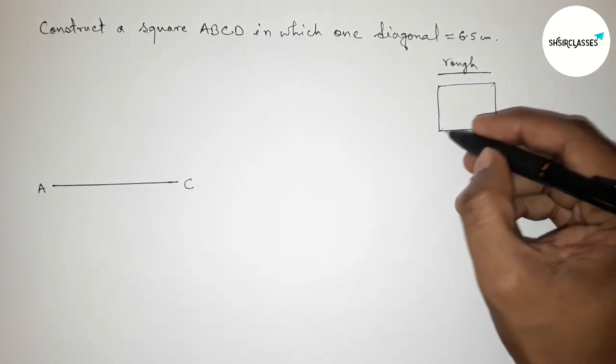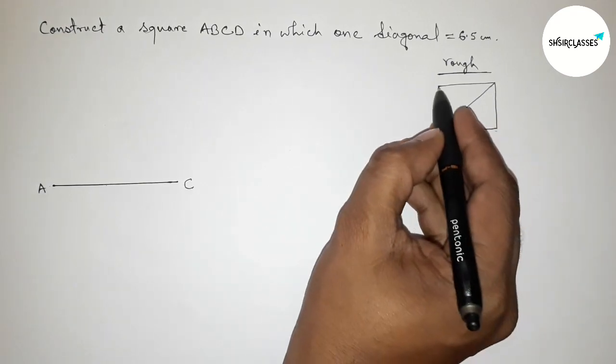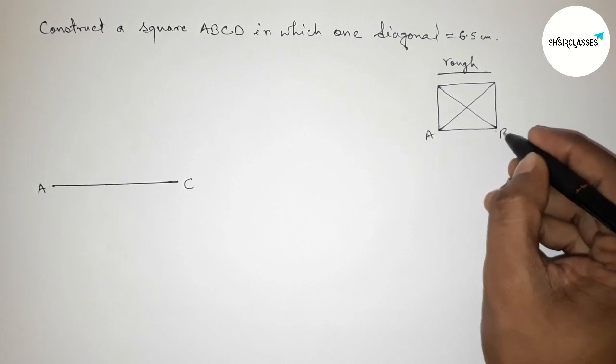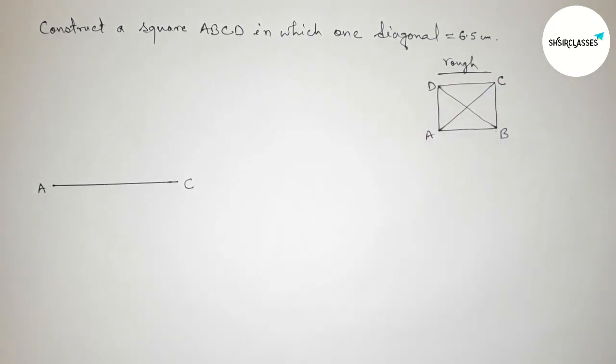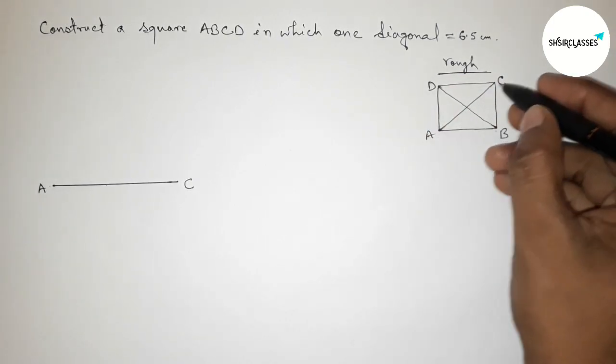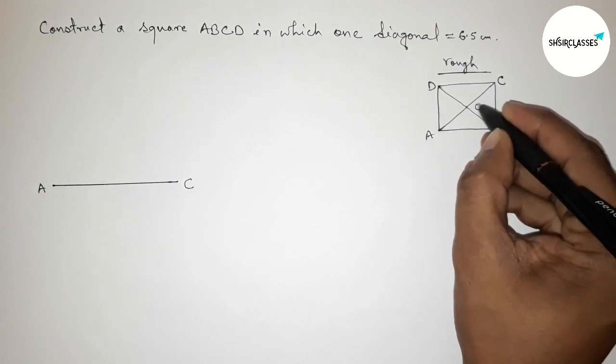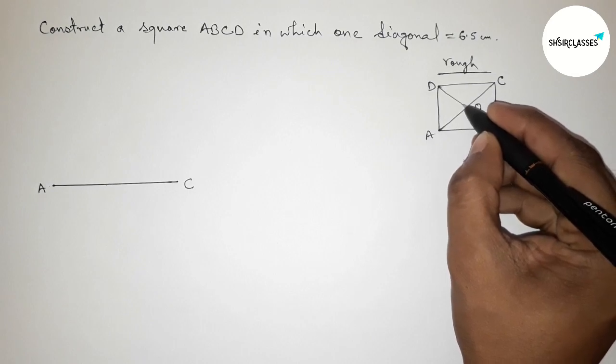Next, roughly discussing here some important property about a square. So first roughly drawing here a square by this way, now joining this diagonal and joining this diagonal. Now taking A, B, C, D.